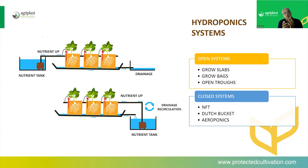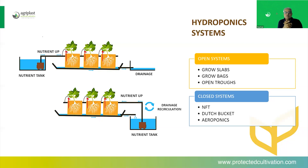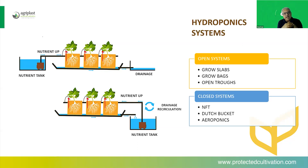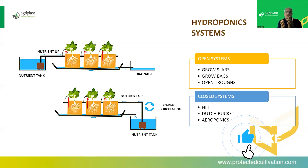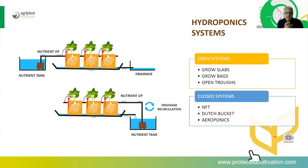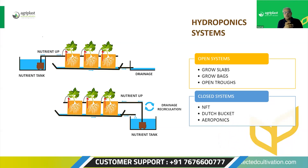You need to know how both systems work and what precautions you are supposed to take so that you can handle these systems properly. When I talk about the open system, it includes growing in grow bags, open traps, or grow slabs. These all come under the open system. The closed system — which is the real hydroponics — includes NFT, Dutch bucket, and aeroponics. These are the most popular ones. Let's now go ahead and discuss these systems in a little more detail.